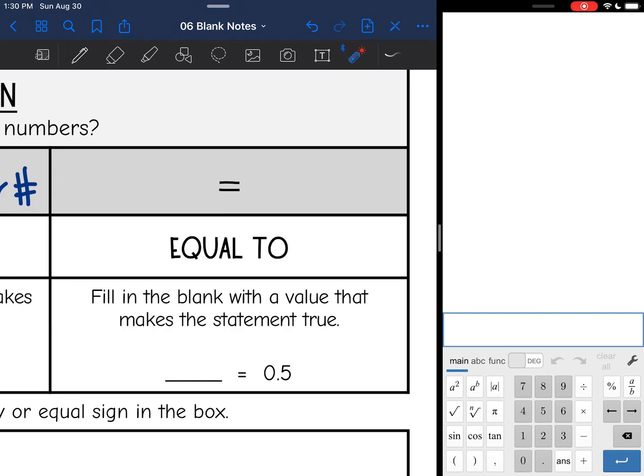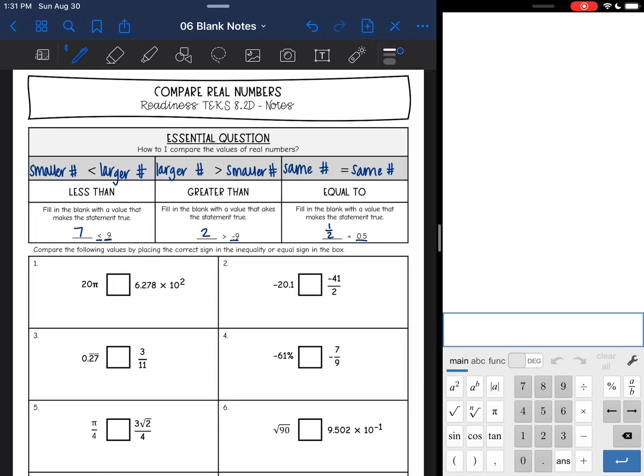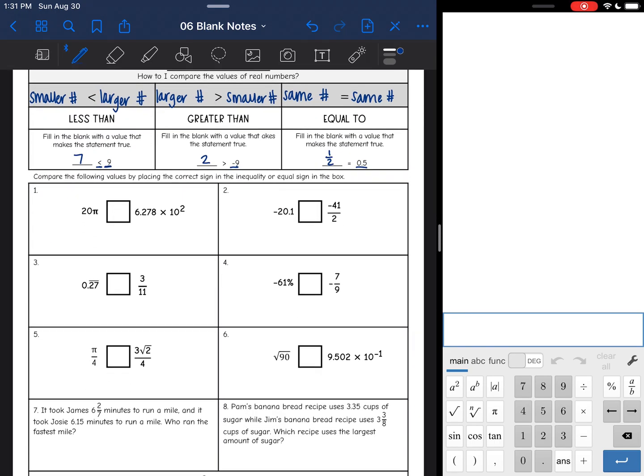Then equal to, this is just where it is the same number on both sides. You might be asking yourself, why would we be looking at two numbers that are the same? Here is an example. If we have 0.5, another way to write that is one half. So now let's practice some of this.